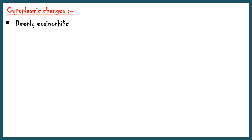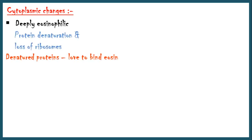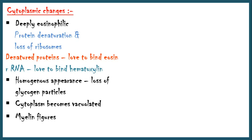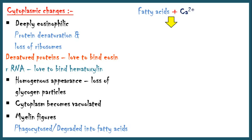The cytoplasm of the necrotic cell looks deeply eosinophilic with H&E stain. This is due to protein denaturation and loss of ribosomes, because denatured proteins bind eosin, and ribosomal RNA loves to bind hematoxylin. Loss of ribosomes causes reduction in binding of hematoxylin. The cytoplasm gets a homogeneous appearance and becomes vacuolated. Myelin figures, which are derived from damaged cell membranes, accumulate within the cytoplasm. They are either phagocytosed or degraded into fatty acids, which may combine with calcium ions and form calcium soaps — so eventually the necrotic cell becomes calcified.